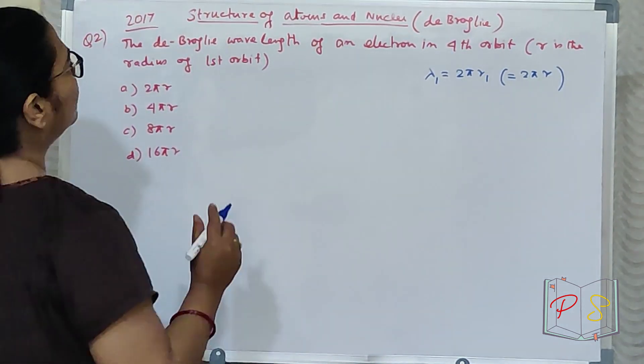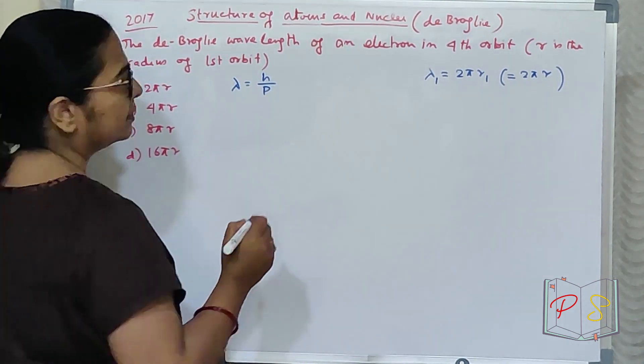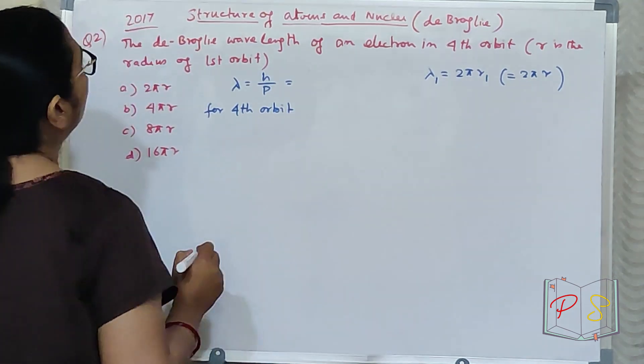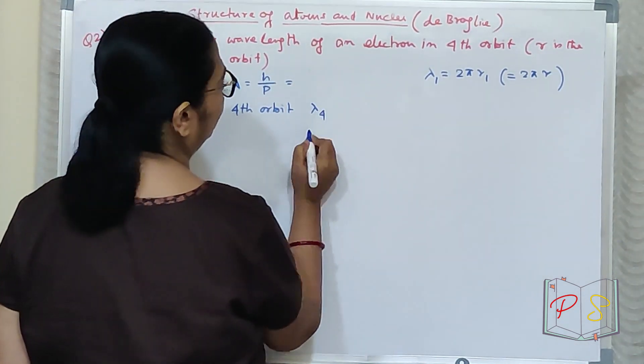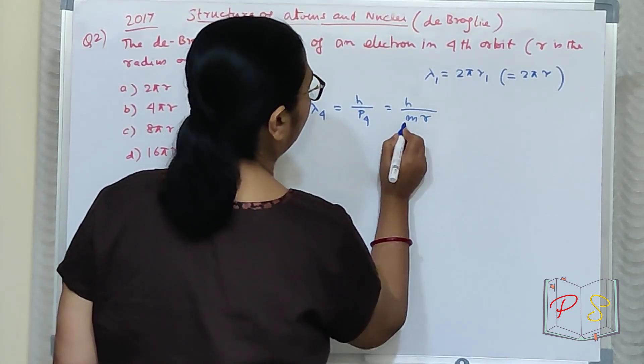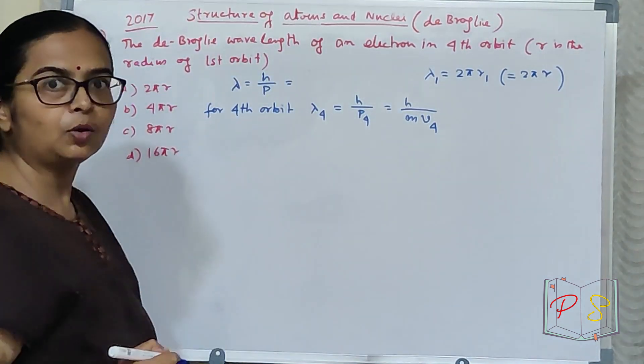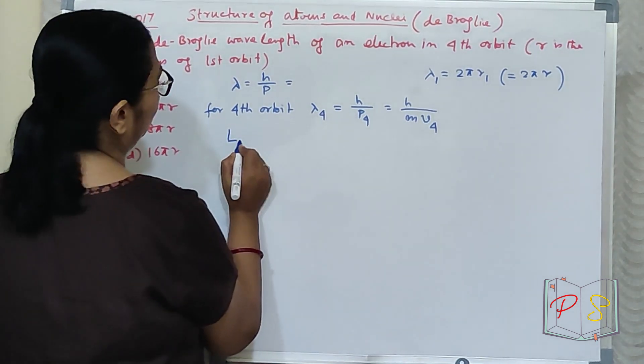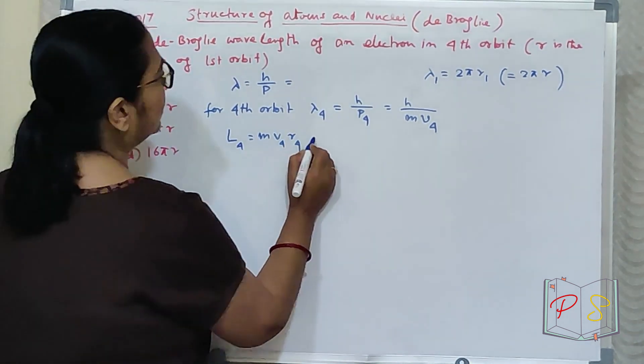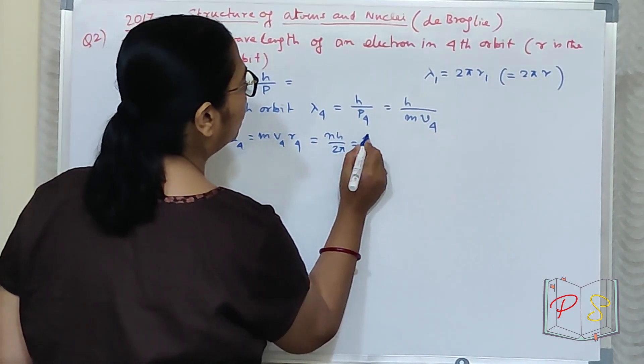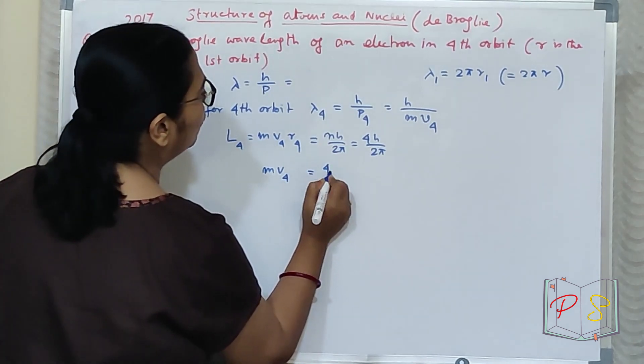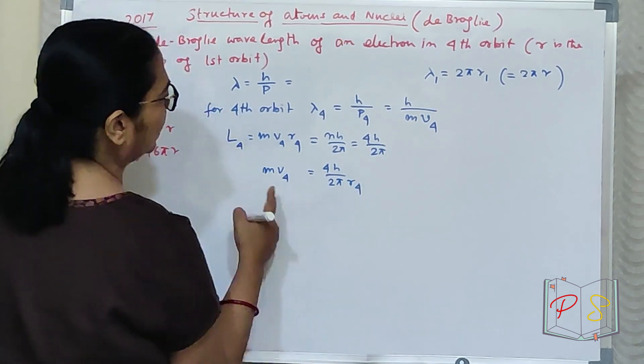Now let me come to fourth orbit. For fourth orbit, lambda = again h/p. Lambda for fourth orbit. We need wavelength for fourth orbit. Took 4. h is constant, p₄. h/m is constant, v₄. No problem? Now L₄ = m·v₄·r₄. Writing for fourth orbit. It should equal n·h/2π, so 4h/2π. So what happened? m·v₄ = 4h/2πr₄. This needs to go here.